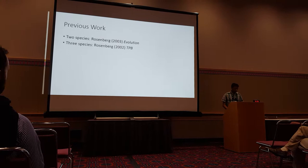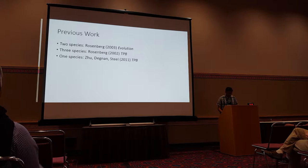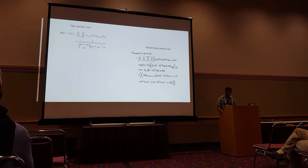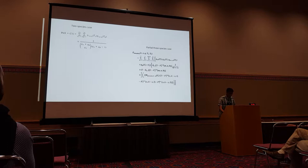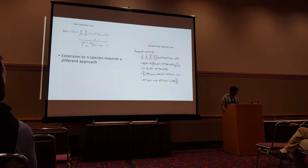Previous work on this topic has been limited to just a few species, mostly by my advisor Rosenberg and his colleagues. What I'm going to do is extend the previous work to an arbitrary species tree with n species. The previous results are already quite unwieldy, and it's very difficult to take a species tree and write down the probability. To extend to n species, you need a different approach — and the approach that works really well is a pruning algorithm.